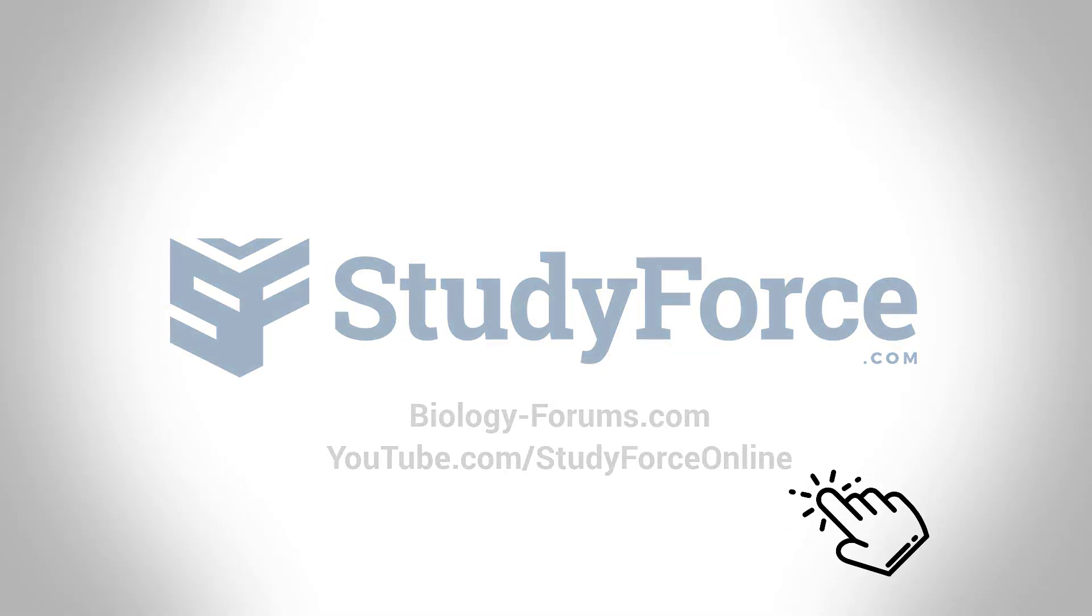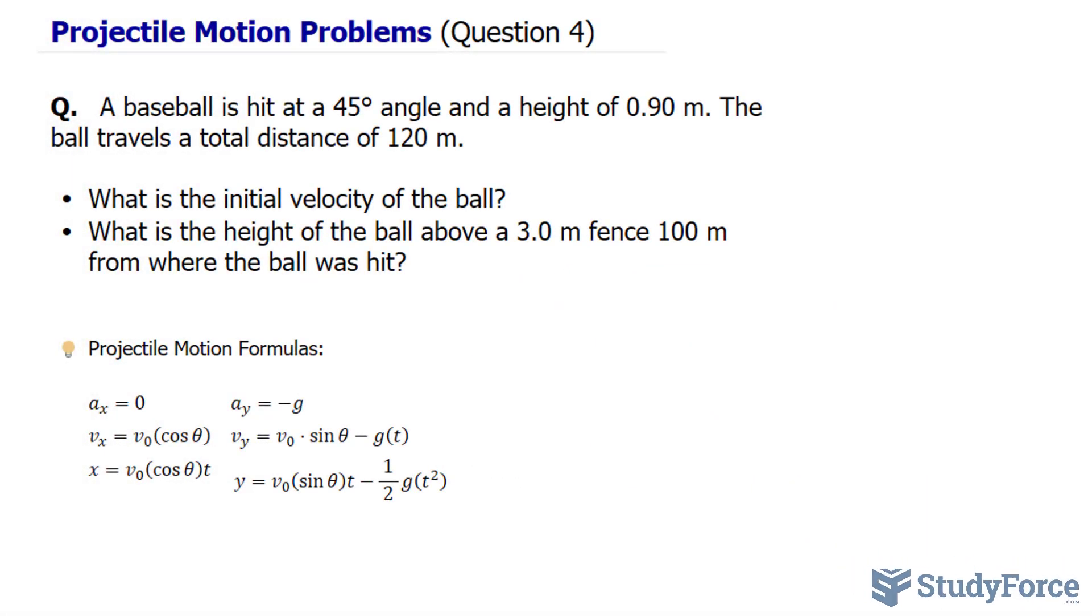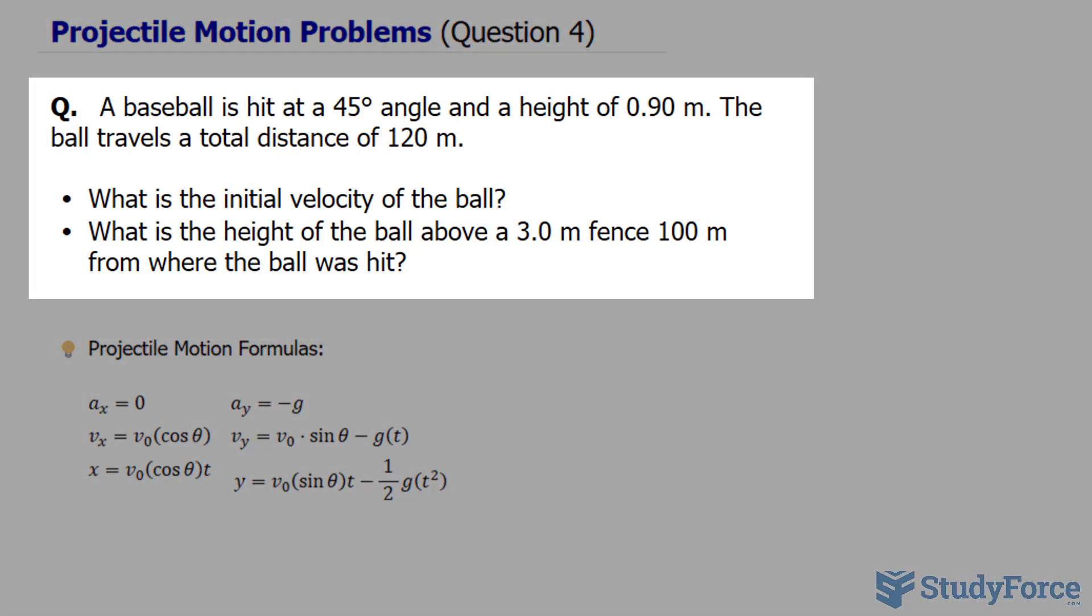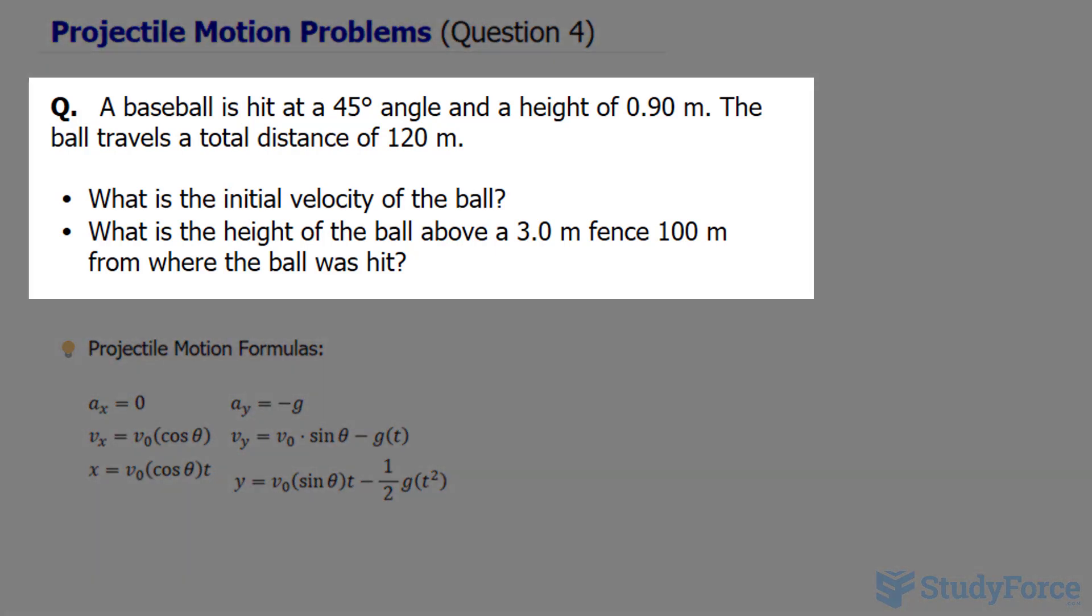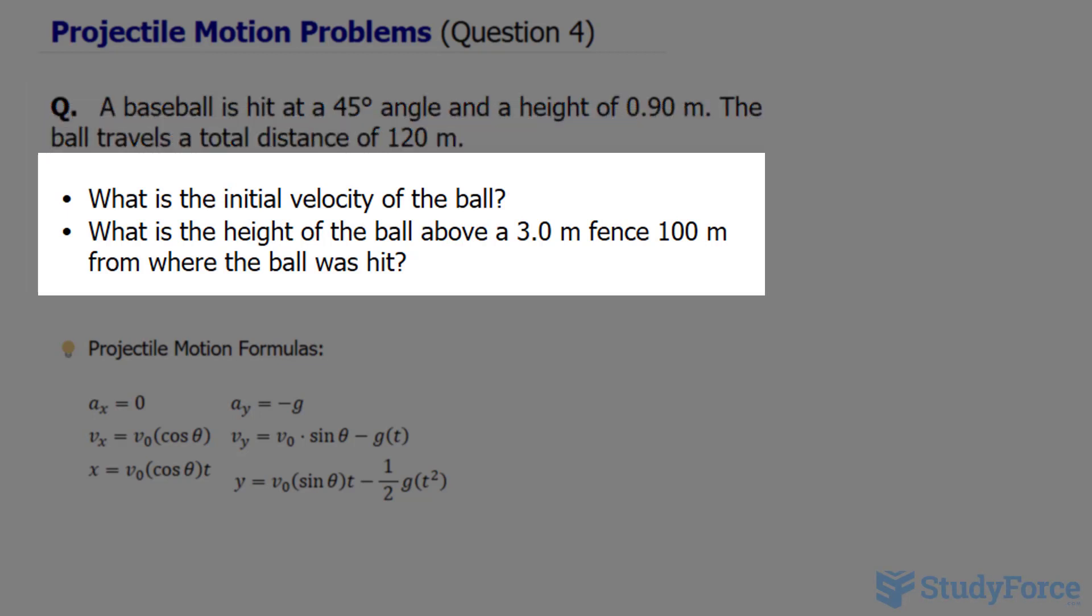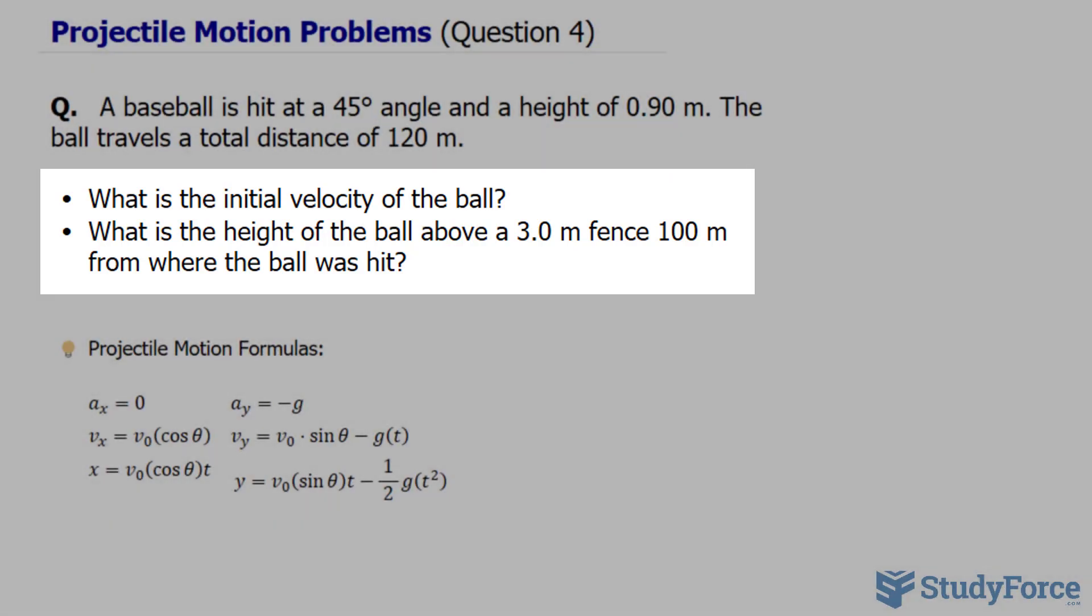Welcome back to question 4 of our series on projectile motion problems. The question reads, a baseball is hit at a 45 degree angle and a height of 0.9 meters. The ball travels a total distance of 120 meters. What is the initial velocity of the ball? And what is the height of the ball above a 3.0 meter fence, 100 meters from where the ball was hit?